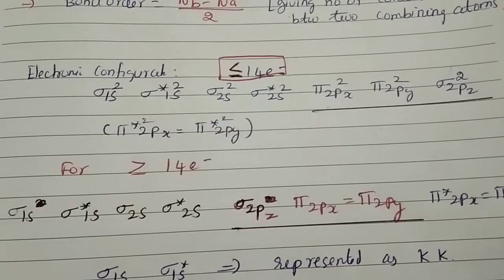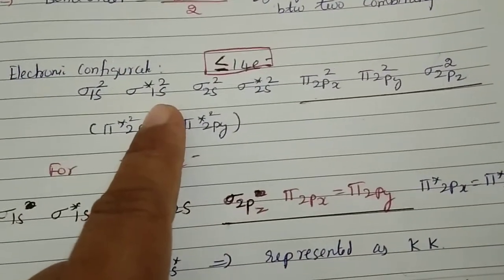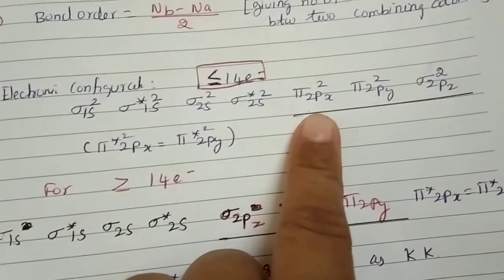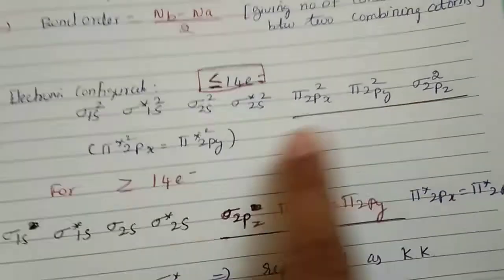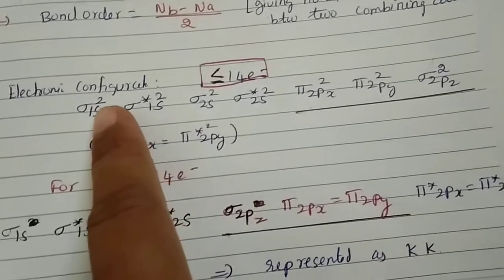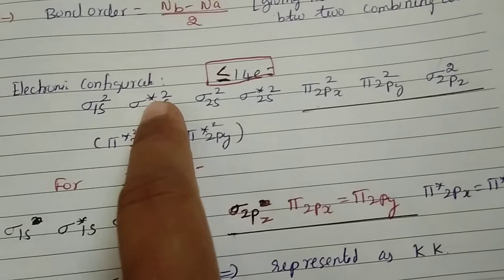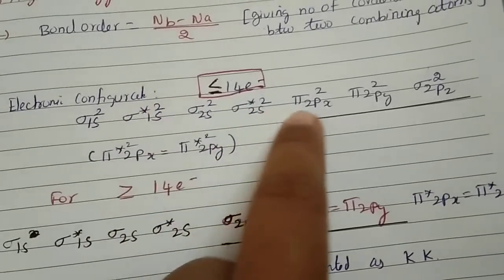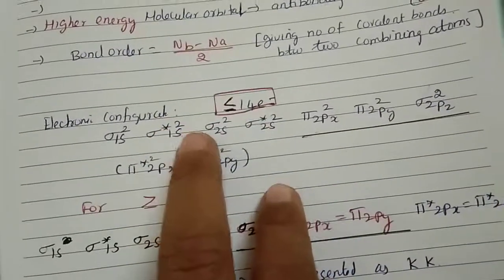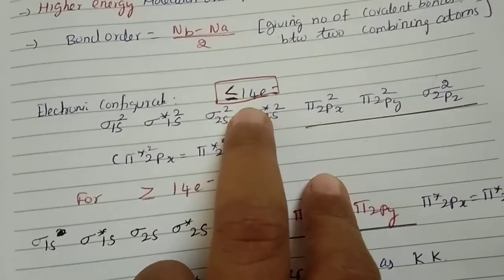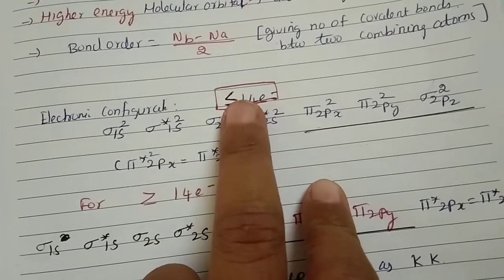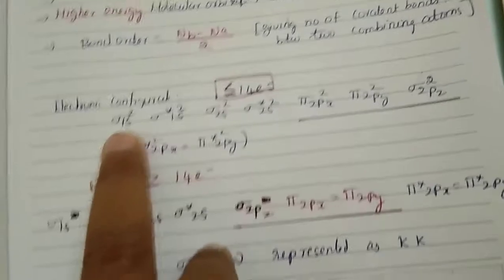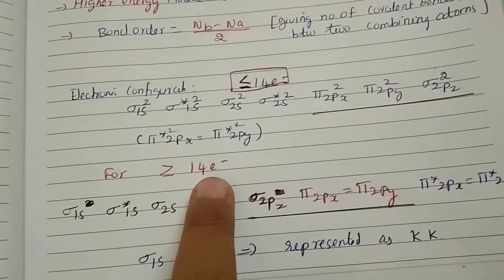The electronic configuration order is: σ1s, σ*1s, σ2s, σ*2s, π2px, π2py, σ2pz, π*2px, π*2py, σ*2pz. Each orbital can hold two electrons. This electronic configuration applies to atoms having less than or equal to 14 electrons.